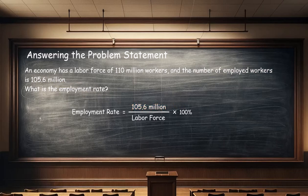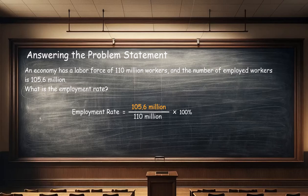Third, from the problem statement, substitute the size of the labor force into the formula. The labor force is 110 million workers, so let's substitute 110 million workers into the formula for the labor force. Fourth, divide the number of employed workers by the labor force. The number of employed workers is 105.6 million and the labor force is 110 million, so dividing 105.6 million workers by 110 million workers gives 0.96.